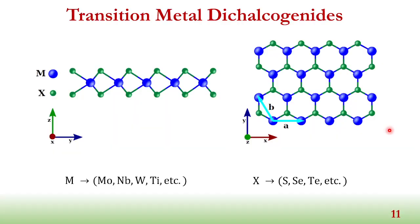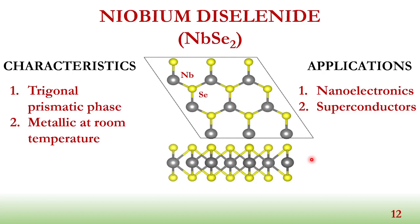We also have transition metal dichalcogenides, which are two-dimensional materials formed by sandwiching a transition metal with two chalcogen atoms. Transition metals include molybdenum, niobium, tungsten, titanium, and others. Chalcogen atoms include sulfur, selenide, and so on. For example, niobium diselenide is formed by sandwiching niobium — indicated by the gray color — with two selenide atoms.